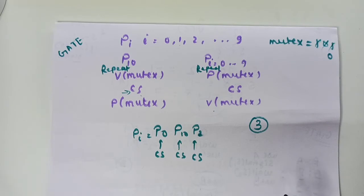Because P10's code is the opposite — it signals first — that signal is utilized by any other process from Pi. So at a time, three processes can be inside the critical section and create chaos. This question is solved like this. Hope you have understood.